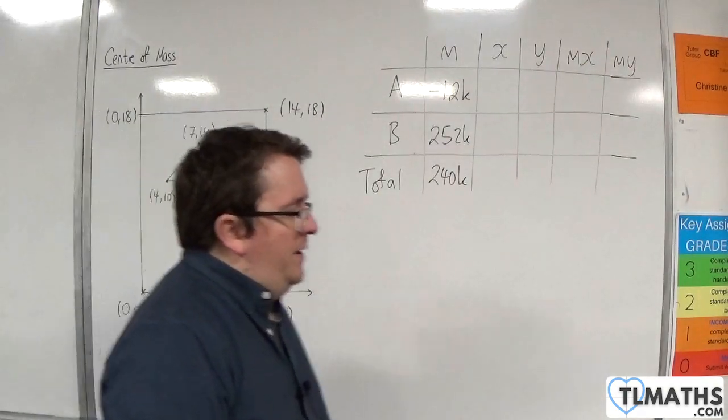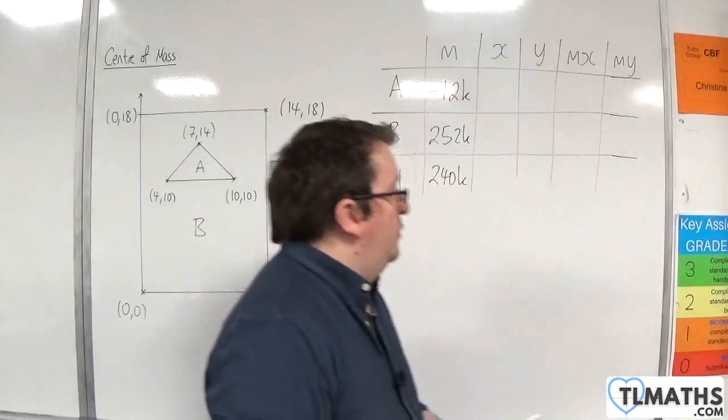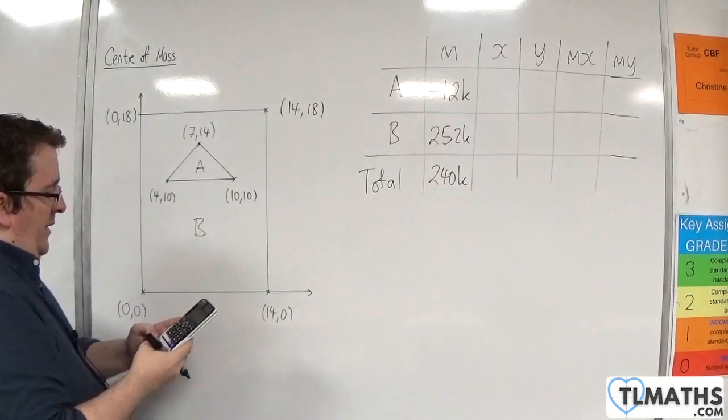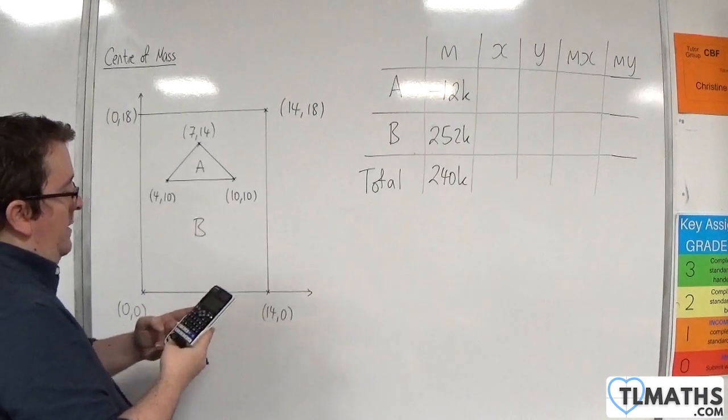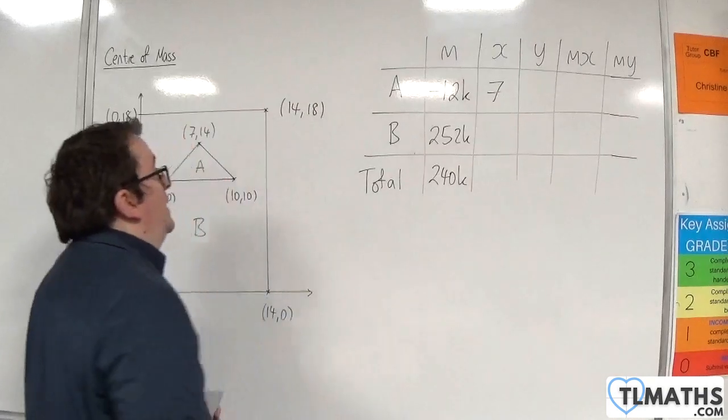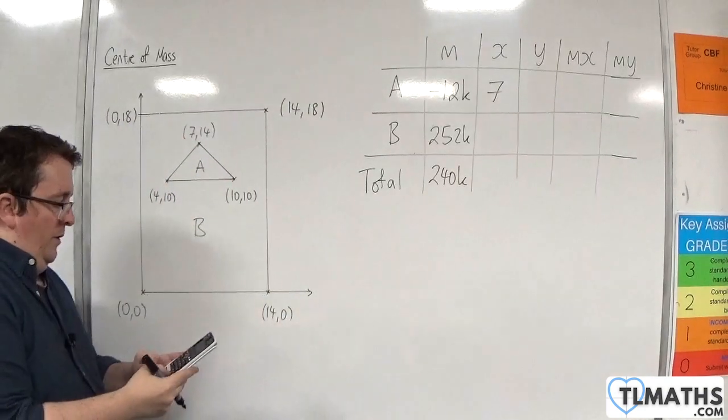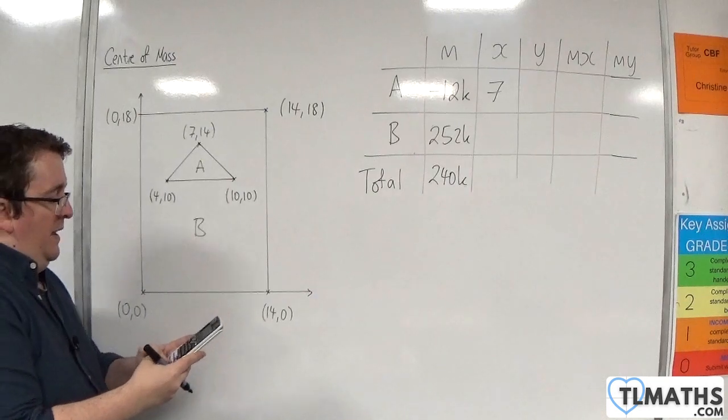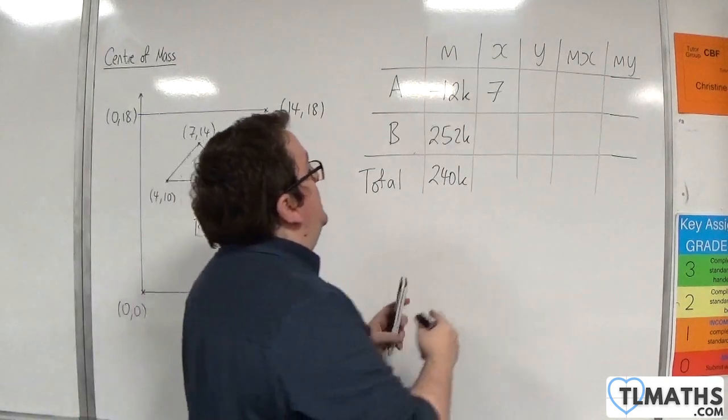Now, the x-coordinate of the centre of mass of the triangle: if we find the average of the x-coordinates, 4 plus 7 plus 10, which is 21 divided by 3, is 7, as we expected. The y-coordinate is 10 plus 14 plus 10, divide that by 3, is 34 thirds.